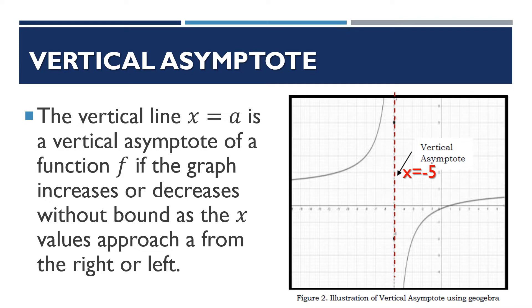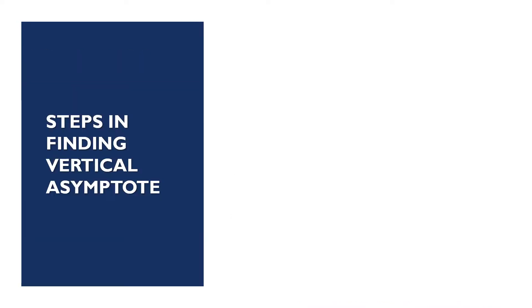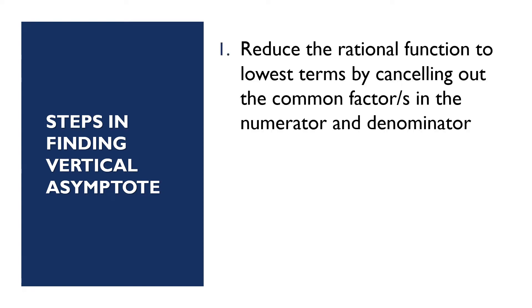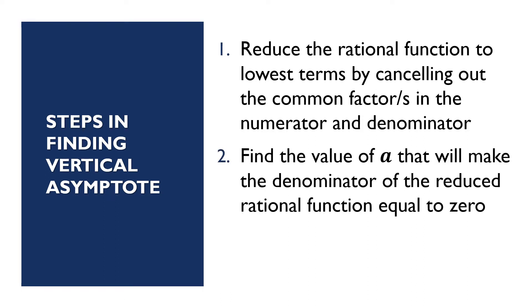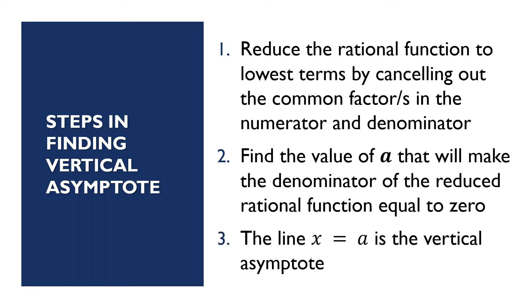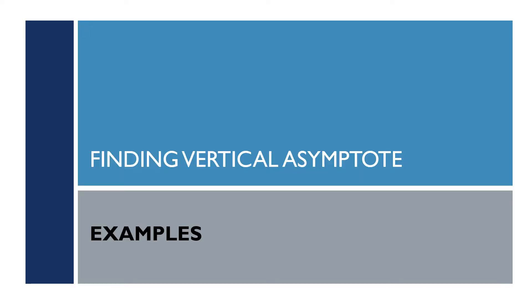In this example, the vertical asymptote is at x is equal to negative 5. What are the steps in finding the vertical asymptote? Step 1 is to reduce the rational function to lowest terms by cancelling out the common factors in the numerator and denominator. Step 2 is to find the value of a that will make the denominator of the reduced rational function equal to 0. Then the line x is equal to a is the vertical asymptote.